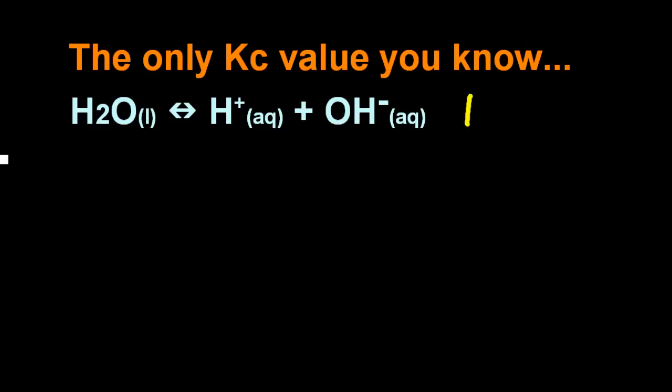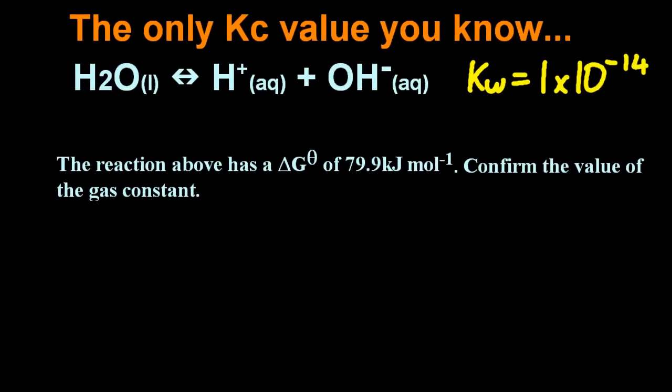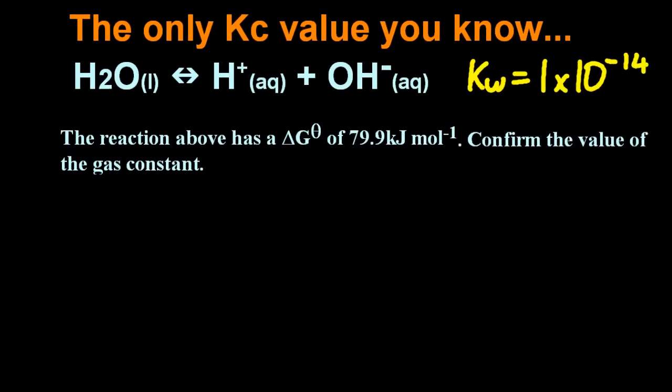So the only Kc value that you know is for the dissociation of water. And it's 1 times 10 to the minus 14. So what can we do with that then? Well, if I tell you that delta G theta for that reaction is 79.9 kilojoules per mole, can you work out the value of the gas constant?